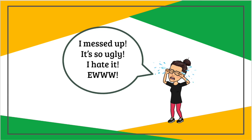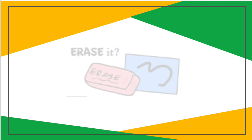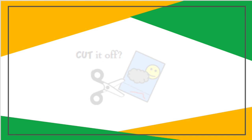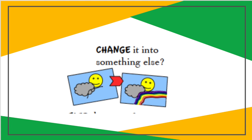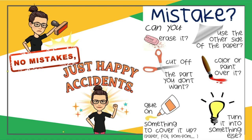So what happens if you make a mark on your paper that you consider a mistake? You can erase it — that's why we draw light until you have it right. If you draw lightly, it makes it much easier to erase. You can flip your paper over, there's a whole other side. Maybe you want to cut that part off, color or paint over it, turn it into something else, or glue something on top. You only get one piece of paper, but you'll be surprised what you can do with a mistake. Sometimes it turns into a happy accident.